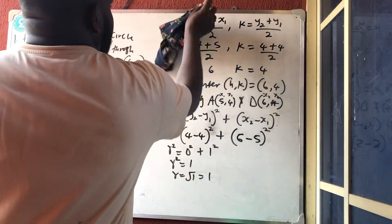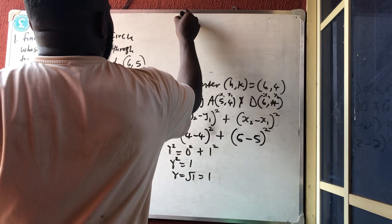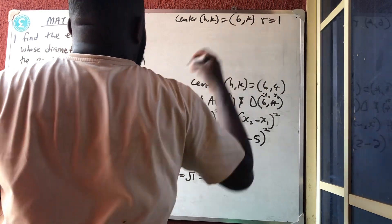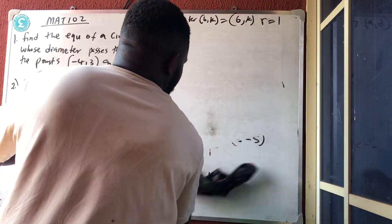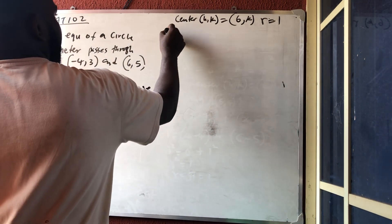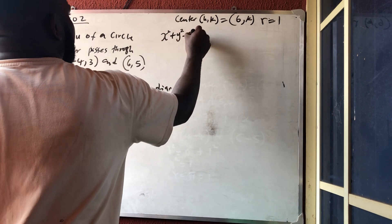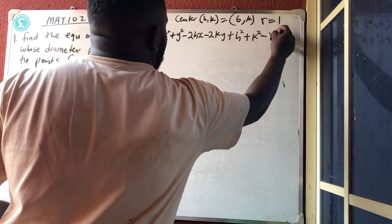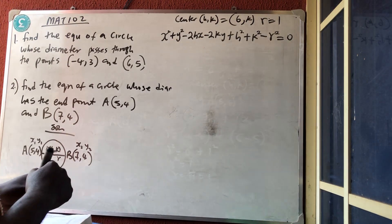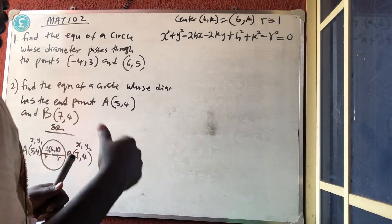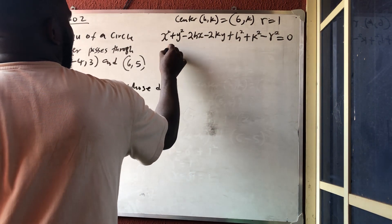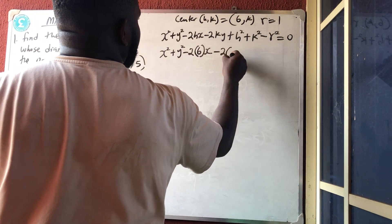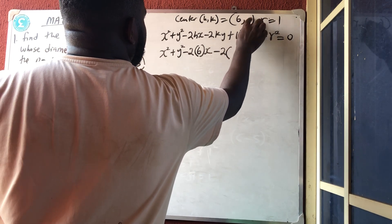Since I've gotten the center and the radius, to get the equation is now very simple. The center which is h comma k equals 6 comma 4, and the radius is 1. Let's now write the equation of a circle and then substitute. The equation of a circle, don't forget, is x² + y² - 2hx - 2ky + h² + k² - r² = 0. So I'm having x² + y² - 2 into my h which is 6 times x, minus 2 into k which is 4 times y.